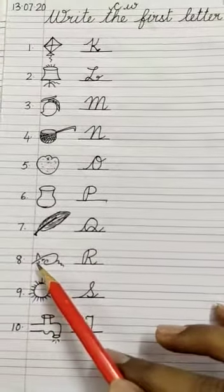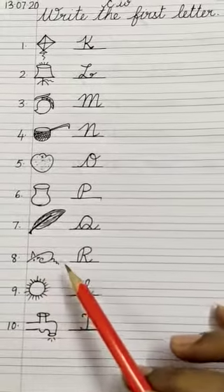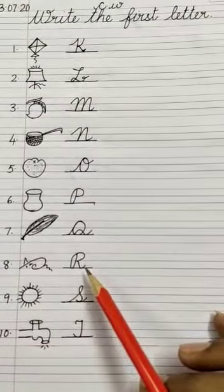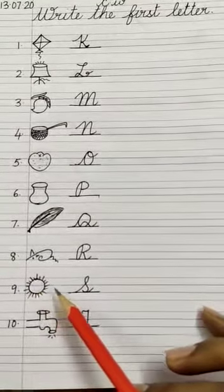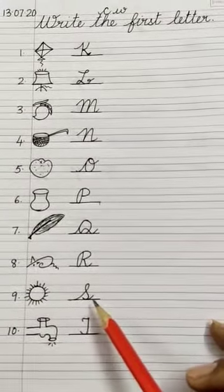Number eight, you will draw a rat and write letter R. Number nine, you will draw a tap like this and write letter T.